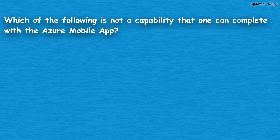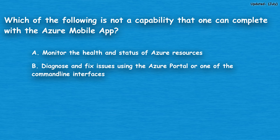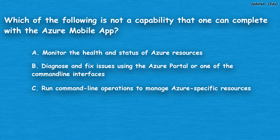The next question: which of the following is not a capability that one can complete with the Azure mobile app? Option A: monitor the health and status of Azure resources. Option B: diagnose and fix issues using the Azure portal or one of the command line interfaces. Option C: run command line operations to manage Azure specific resources. Option D: create machine learning models.